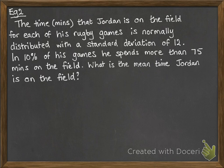OK, example number two. The time in minutes that Jordan is on the field for each of his rugby games is normally distributed with a standard deviation of 12. In 10% of his games, he spends more than 75 minutes on the field. What's the mean time Jordan is on the field during his rugby games?